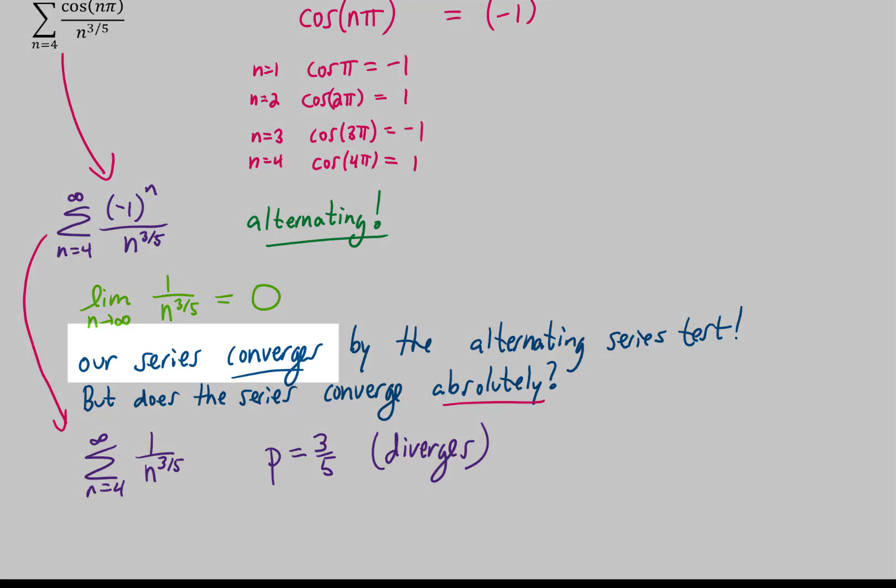So, the first part of this problem told us that our series converges by the alternating series test. However, the second part of the problem says that the series does not converge absolutely.